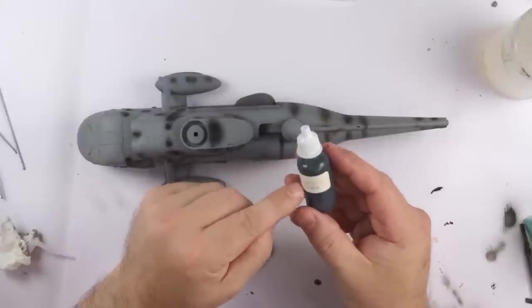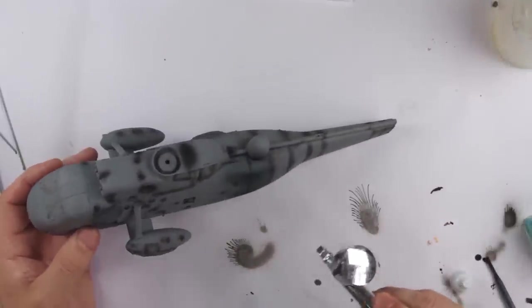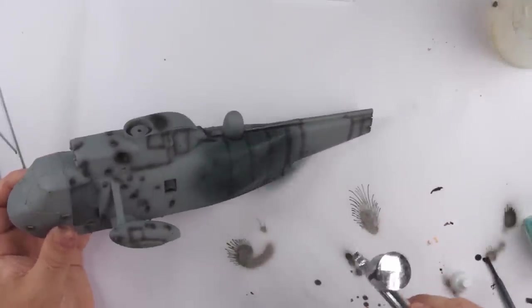To recreate the rather unusual paint shade used on the HAS1, I started with a base of Tamiya C Blue misted all over the fuselage.